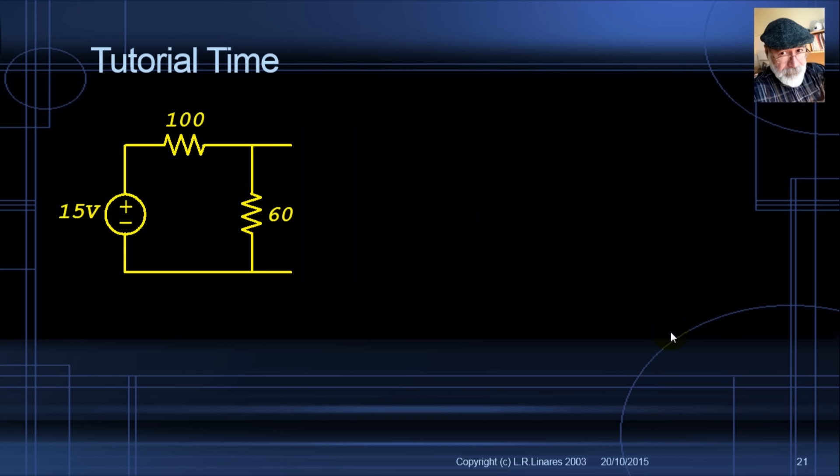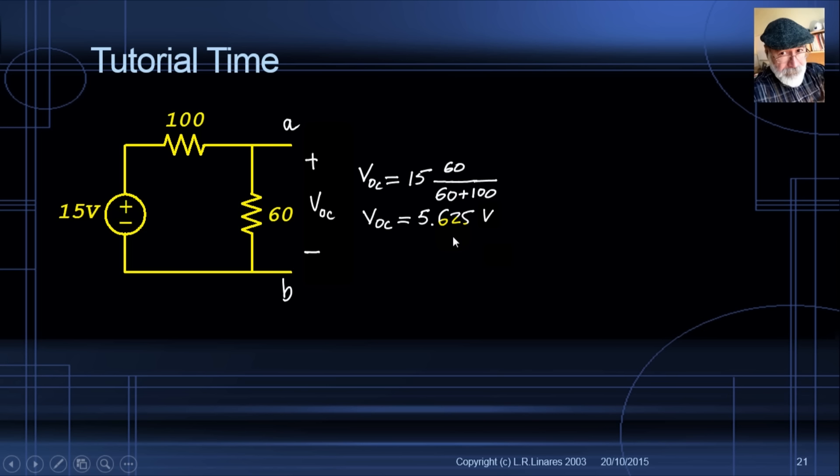Tutorial time. Let's find the Thevenin equivalent of a simple circuit. Find VOC at port AB. Using a voltage divider: VOC = 15 × 60 / 160 = 5.625 volts. That is VOC and also V_TH.